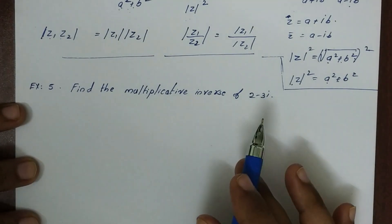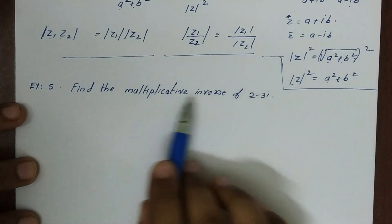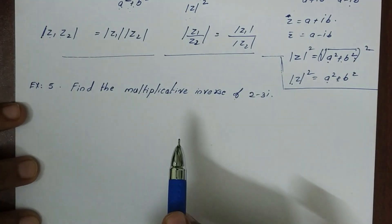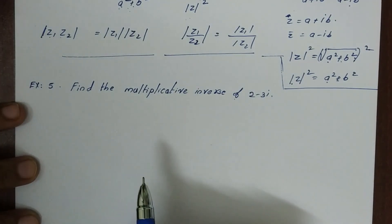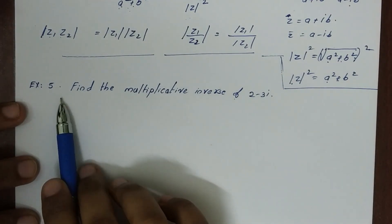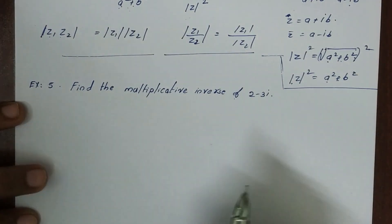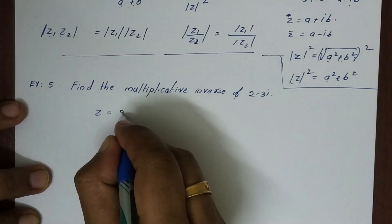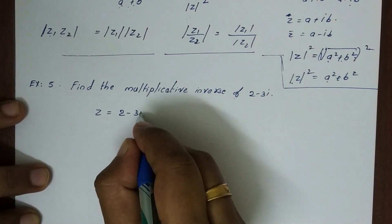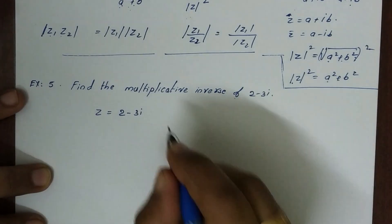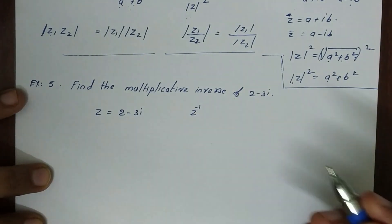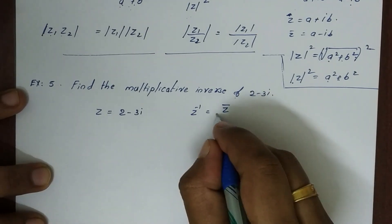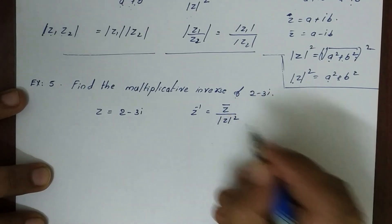Hi students. I have told you about the multiplicative inverse of 2-3i, so it is a complex number. z is equal to 2-3i and multiplicative inverse z inverse is equal to z-bar divided by modulus of z squared.